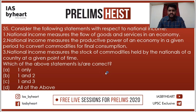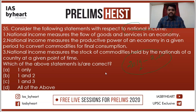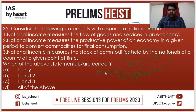Consider the following statements with respect to national income. National income is nothing but the country's income earned in a particular year — for example, from April 1, 2019 to March 31, 2020, one financial year. It may be calculated in different ways like GDP, GNP, NDP, NNP, etc. National income measures the flow of goods and services in our economy — flow is very important. National income also measures the productive power of our economy in a given period to convert commodities for final consumption — also a correct statement.